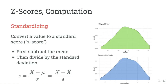A related but separate idea is what we call a Z-score — this is called standardizing. It basically converts a value to what's called a standard score. The equation is: you take your value minus the mean and divide by the standard deviation. Or, in a sample where you don't know the population mean and standard deviation, you use your value minus the sample mean divided by the sample standard deviation. That gives you a Z-score.